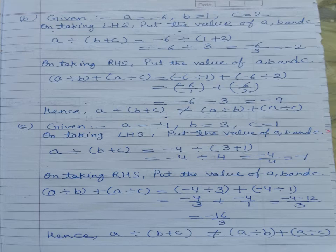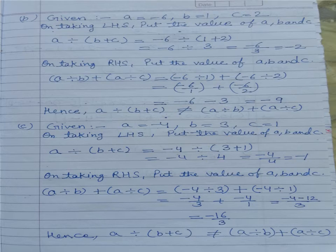Now question number C: given A equals minus 4, B equals 3, and C equals 1. On taking the left-hand side: minus 4 divided by (3 plus 1) equals minus 4 upon 4 equals minus 1. On taking the right-hand side: A divided by B plus A divided by C equals minus 4 divided by 3 plus minus 4 divided by 1 equals minus 16 upon 3. Left-hand side is minus 1 and right-hand side is minus 16 upon 3, so यहाँ पर भी यह दोनों बराबर नहीं हैं। Hence A divided by (B plus C) is not equal to A divided by B plus A divided by C.